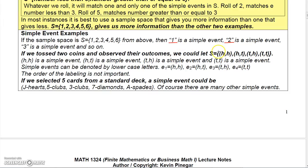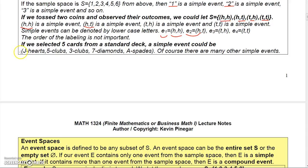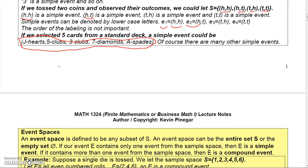If we toss two coins and observe their outcomes, we could say the four possible outcomes are: head-head, tail-tail, head-tail, or tail-tail for the two coins. Each one of these is a simple event — head-head is a simple event, head-tail is a simple event, and so forth. You can denote simple events by lowercase letters, like e1 might be the first simple event, e2 the second, and so forth. The order of labeling these is not really important. If you selected five cards from a deck, a simple event could be just a five-card hand — one simple event out of the many possible five-card hands.